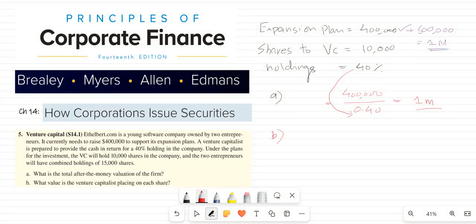Part B: What value is the venture capitalist placing on each share? The share price is the total value, which is $400,000, divided by the number of shares we are giving to the capitalist. By dividing it, you will get $40 per share.